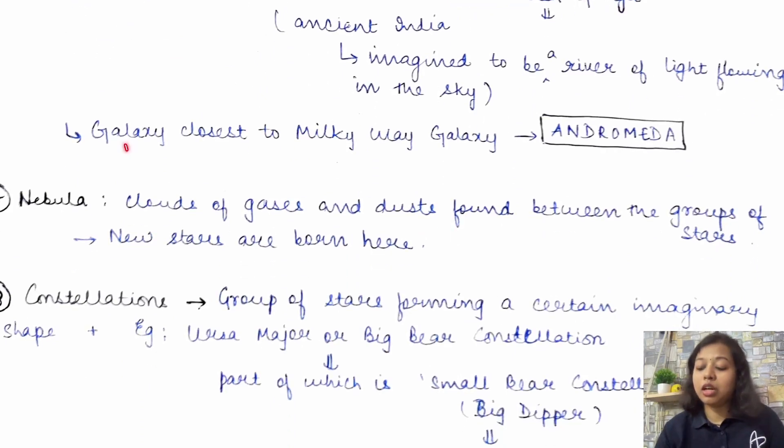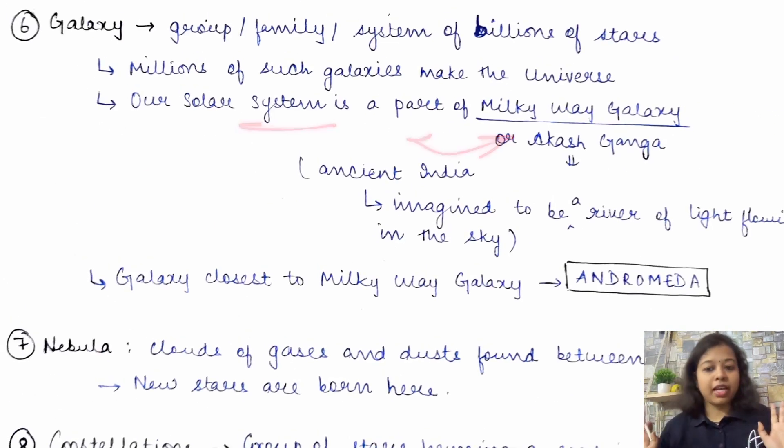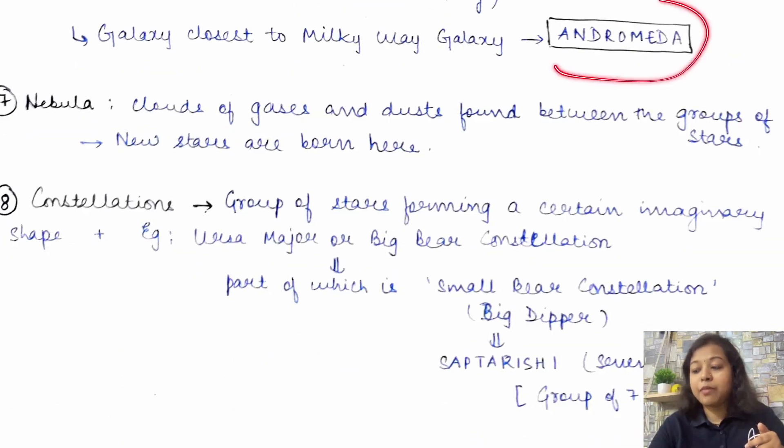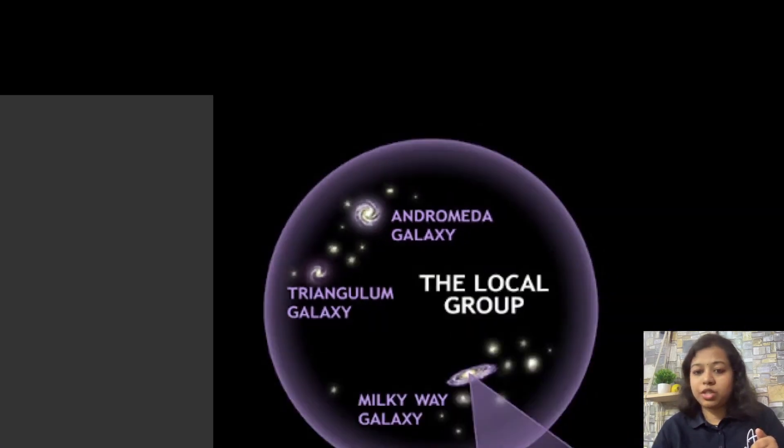I will show you the images also. Don't worry. Another factual point that you have to remember, which is the galaxy closest to the Milky Way galaxy. So, basically, our solar system is a part of this Milky Way galaxy. But then, which galaxy is closest to Milky Way galaxy? You have to remember the name Andromeda. If we, before we move ahead, let's just see this image once.